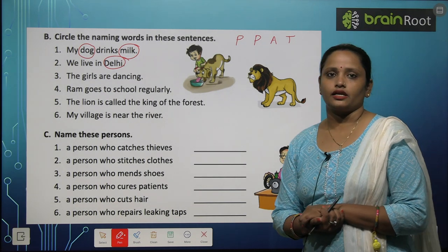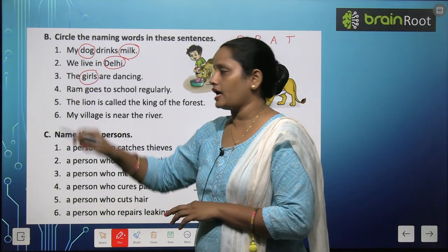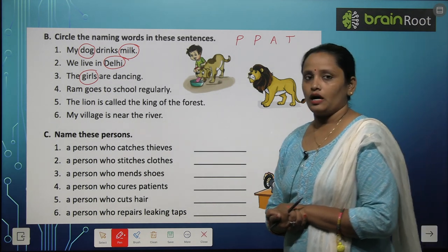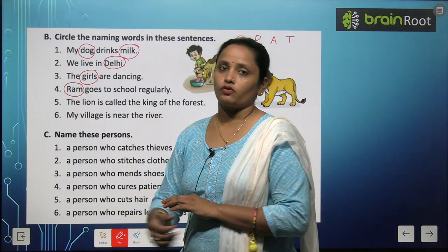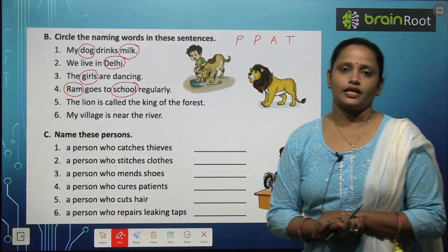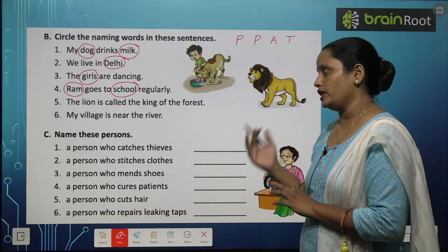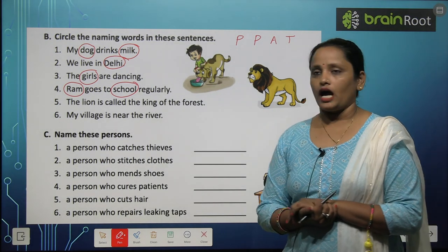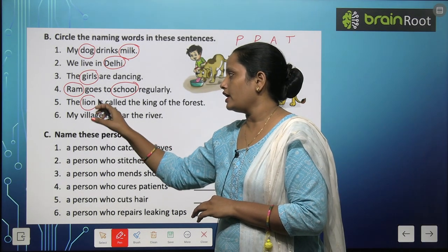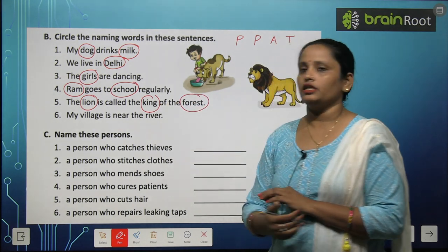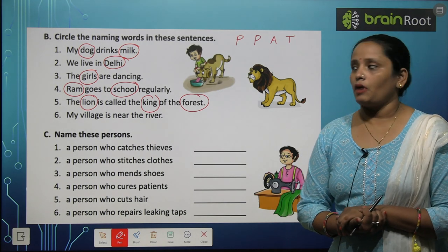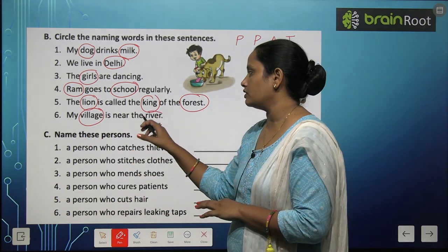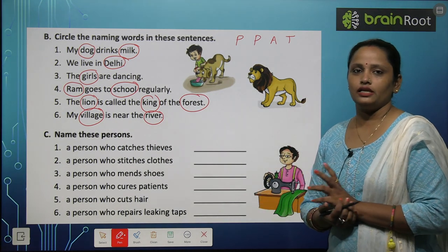The girls are dancing — girls kya hain? Person. Ram goes to school regularly — Ram ko circle kar denge, aur woh kahan ja raha hai? School. Ram ek person ka naam hai aur school ek place ka. The lion is called the king of the forest — lion ek animal hai, aur king aur forest — tino ko circle karenge. My village is near the river — village aur river ko circle karenge, kyonki dono hi ek place hain.